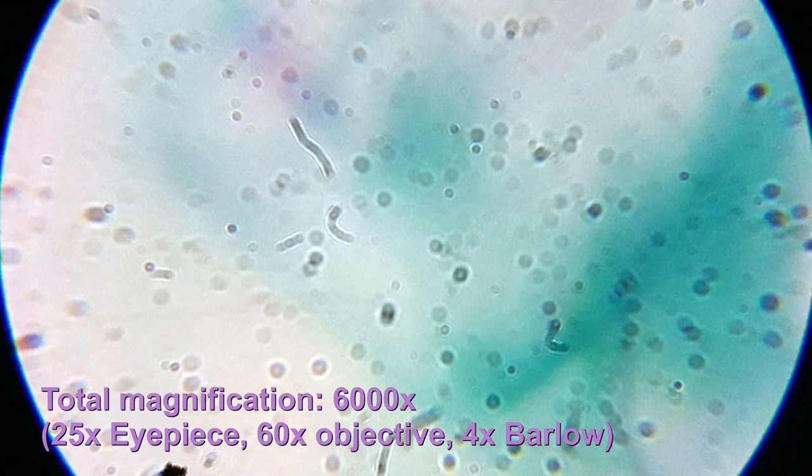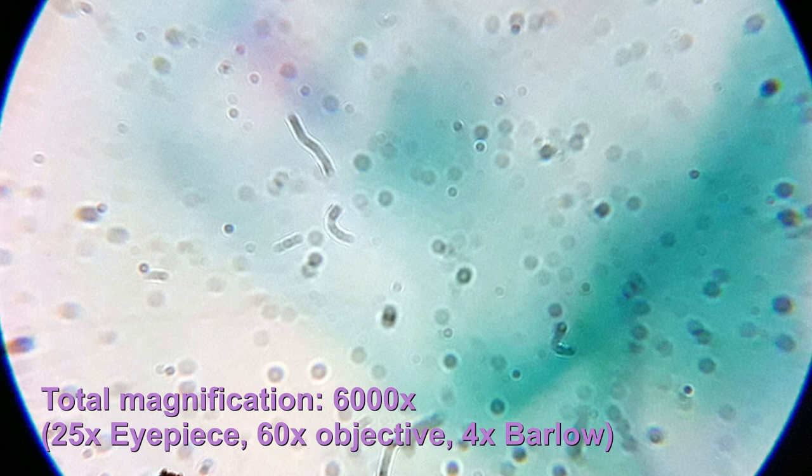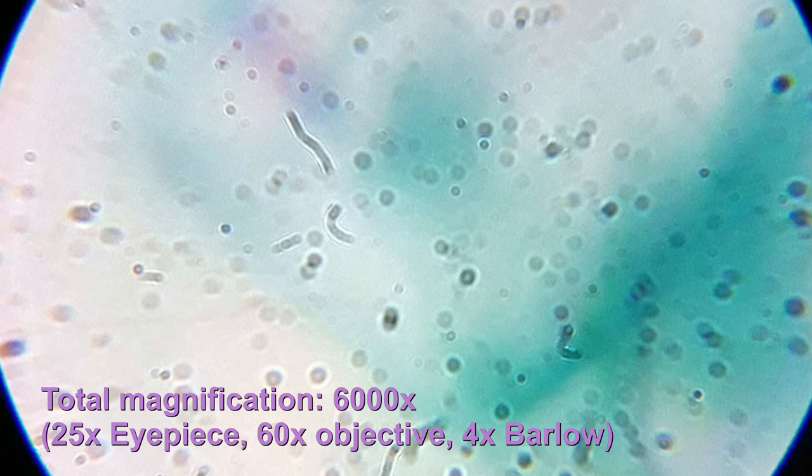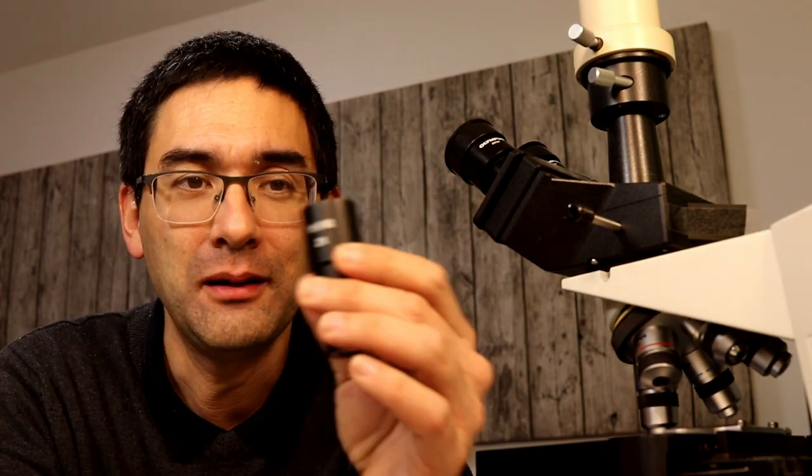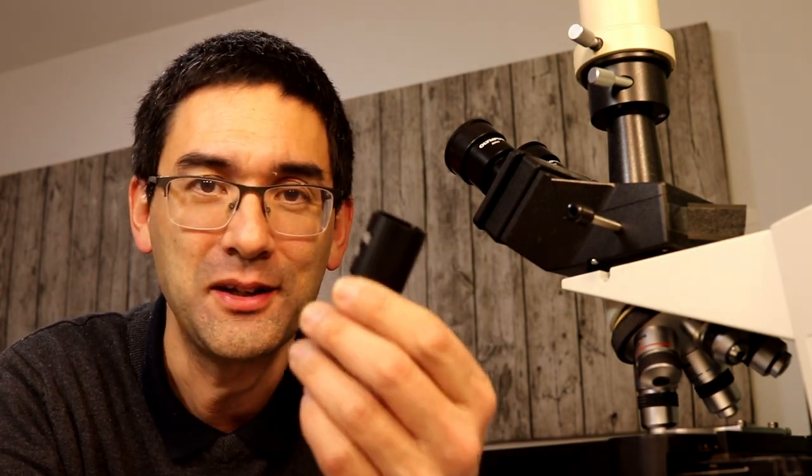That is everything I wanted to show you. What do we learn from all of that? Essentially I just wanted to demonstrate that you can almost get any magnification you want by simply exchanging the eyepiece and adding Barlow lenses. But the problem is you don't always see more because the image becomes darker and also significantly more blurry. My advice is that if you want to increase magnification, first go up with the magnification of the objective.